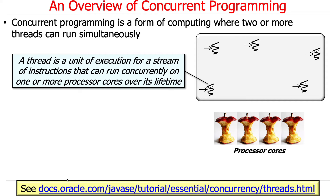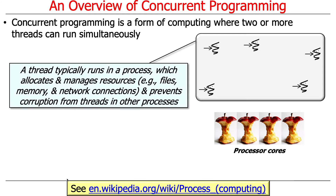That's a good quiz question. A thread typically runs in the context of a process — that's the gray rounded angle where the threads are running. The process allocates and manages various resources like files, memory, and network connections. It also prevents corruption of threads within the process from threads in other processes, via memory management unit techniques such as partitioning and MMU protection.